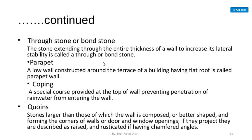Bond stone — the stone extending through the entire thickness of a wall to increase its lateral stability is known as the through or bond stone. Parapet — a low wall constructed around the terrace of a building having a flat roof is known as a parapet wall. Coping — a special course provided at the top of a wall preventing penetration of rain water into the wall. Quoins — stones that are larger or better shaped than those of which the wall is composed, forming the corners of walls or door and window openings. If they project, they are described as raised and rusticated if having chamfered angles.